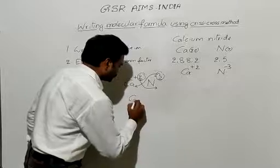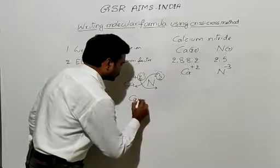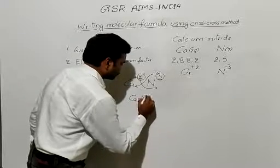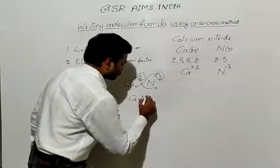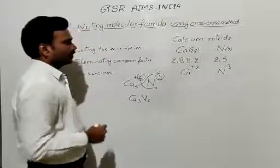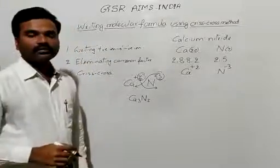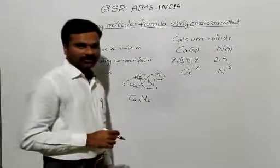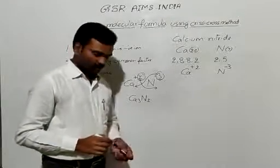Now it becomes Ca₃N₂. This will be the molecular formula of calcium nitrate. In this way, we can simply write the molecular formula of compounds by using the criss-cross method.